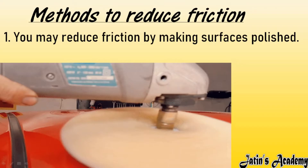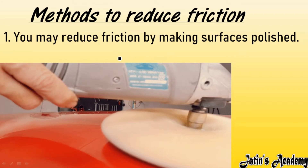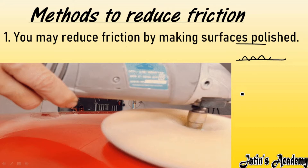Now we are going to study methods to reduce friction. The first method is to make surfaces polished. When a surface is polished, there are less irregularities. If there are less irregularities, there will be less interlocking between the object and the surface, and due to less interlocking, frictional force will be less.